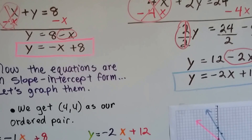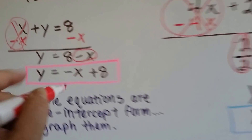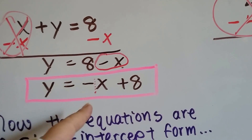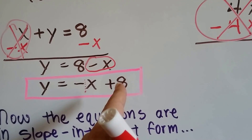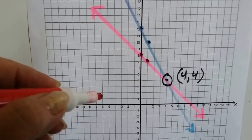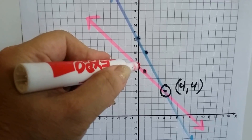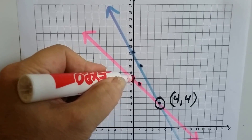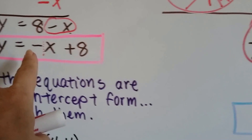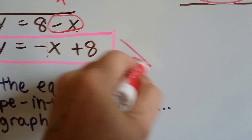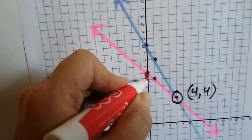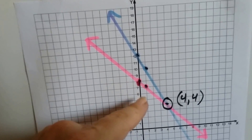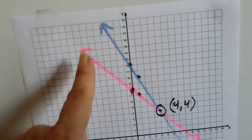Here's our pink line and our blue line — now we can graph them. For the pink line, there's an invisible 1 in front of x. The y-intercept is positive 8, so we plot that point. The slope is negative 1, so the line goes in the negative direction — down 1 and over 1 for rise and run. We end up at the corner of the same square. Drawing a line through these two points gives us the pink line.